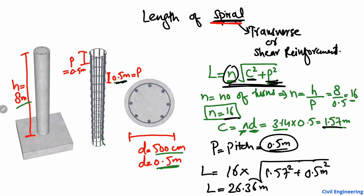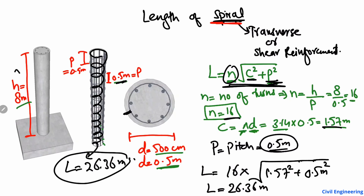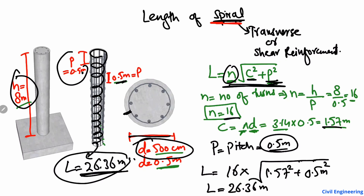So the length of this spiral going throughout the column is 26.36 meters. If your column is 8 meters tall, the pitch is 0.5 meters, and the diameter of the column is 500 centimeters, you will get this length of spiral reinforcement as 26.36 meters. Hope you guys understand, and don't forget to subscribe to our channel for daily E7 engineering videos. Thank you for watching.